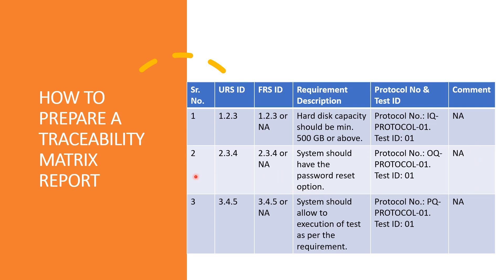In the next example, I have taken one from the OQ. There is a requirement which is mentioned in the URS: the system should have a password reset option. You need to give the protocol number and test ID with respect to this operational requirement which is mentioned in the URS, and likewise you can put the comment. The third example is from the PQ. If your URS states that the system should allow execution of tests as per the requirement, then based on that, you need to provide the protocol number, test ID, and the comment.